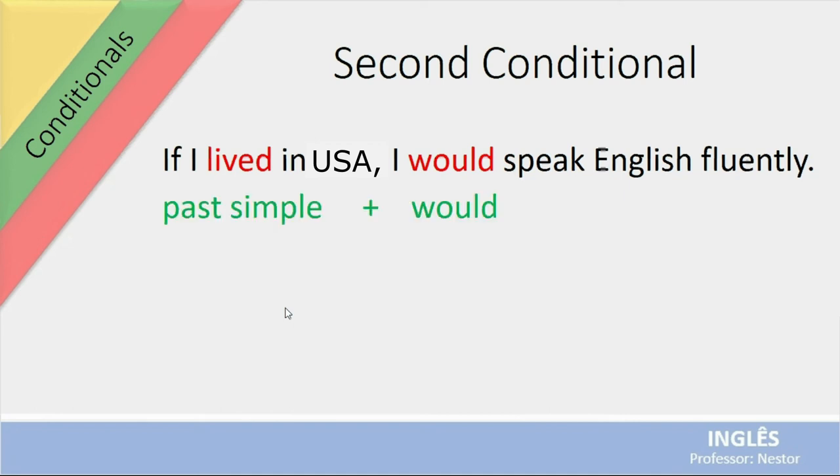Então, vamos ver aqui. A estrutura é, if I lived, então, é simple past, past simple, no problem. E você vai fazer o futuro, no lugar de fazer o futuro com will, como nós temos na first conditional, você vai fazer o futuro com would. Então, aí é fácil também até para você identificar a diferença entre elas. First conditional will. Zero conditional, presente, presente. First conditional, presente e will. E second conditional, passado e would.